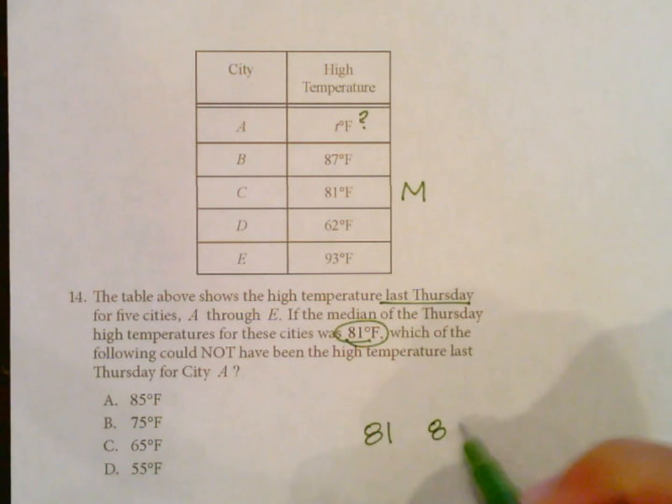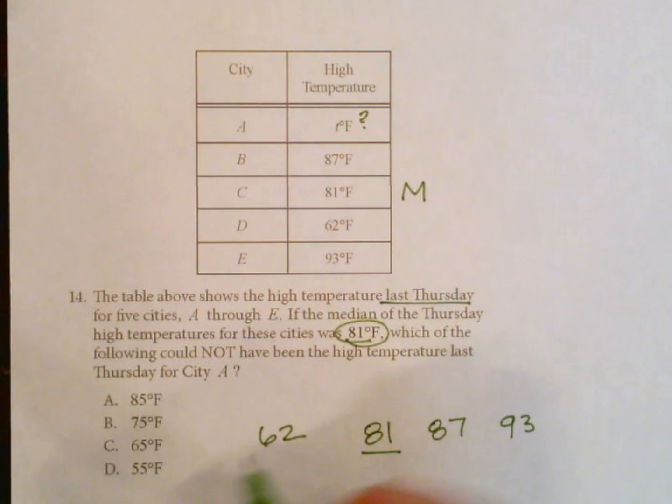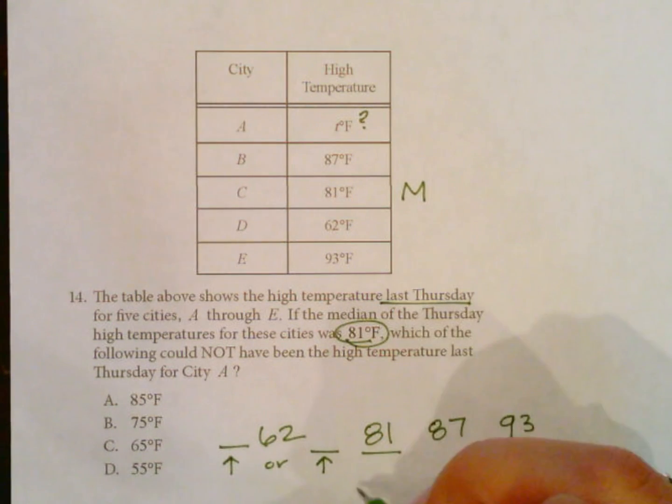Let's go ahead and list these out. If we know 81 is the median, that means it's in the middle. Then there's 87 and 93, and 62 is over here. But we know this is the middle, so it could be a value between these two or it could be less. But we know for sure that it has to be less than 81, because 81 is the median.